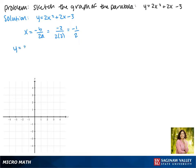To find the y value, we're going to plug it back into the equation. 2 times negative 1 half squared plus 2 times negative 1 half minus 3. Working this out, we get y to be negative 7 halves. This gives us our vertex of negative 1 half, negative 7 halves.